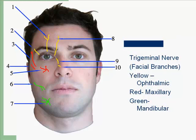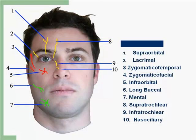Looking at the branches of the trigeminal nerve overall: yellow represents the ophthalmic branches, red represents the maxillary, and green represents the mandibular. These include the supraorbital, lacrimal, zygomaticotemporal, zygomaticofacial, infraorbital, long buccal, mental, supratrochlear, infratrochlear, and nasociliary nerves.